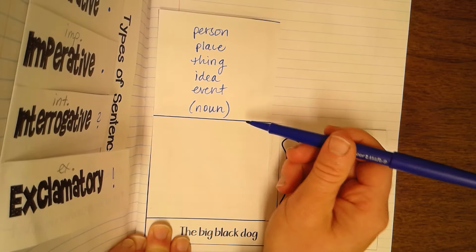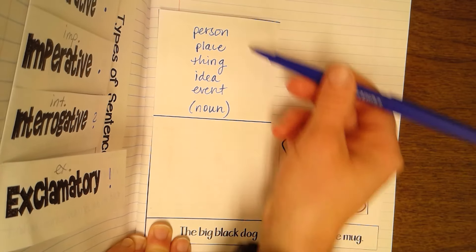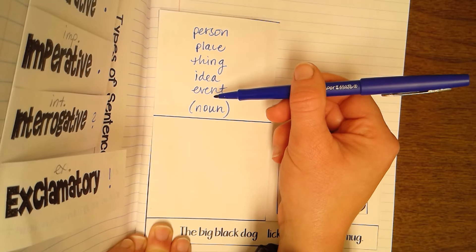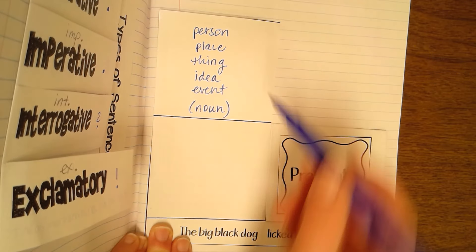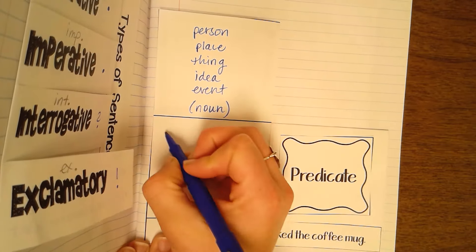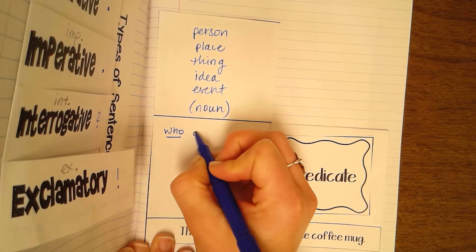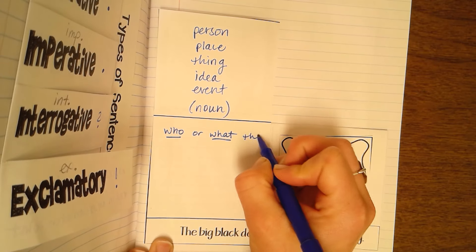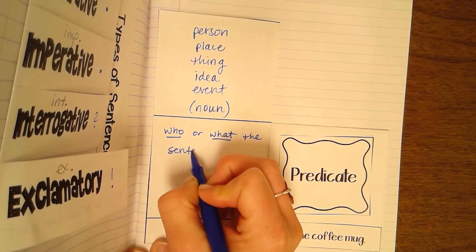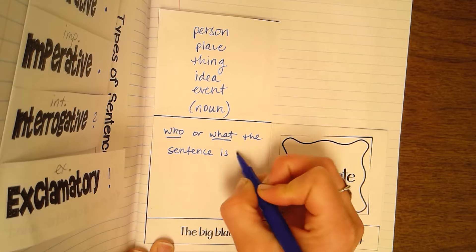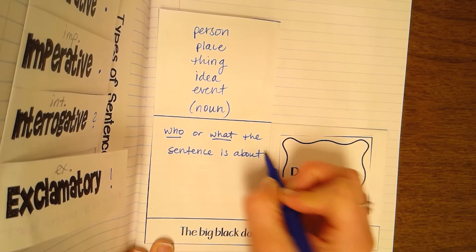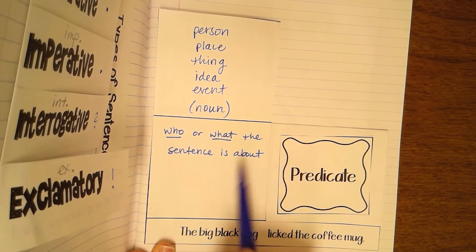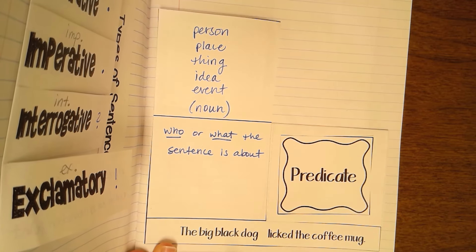Basically what we're looking at is who or what — person, place, thing, idea, or event — is doing the action in the sentence. You're going to find yourself asking that question many, many times: who or what, who or what is the sentence about?